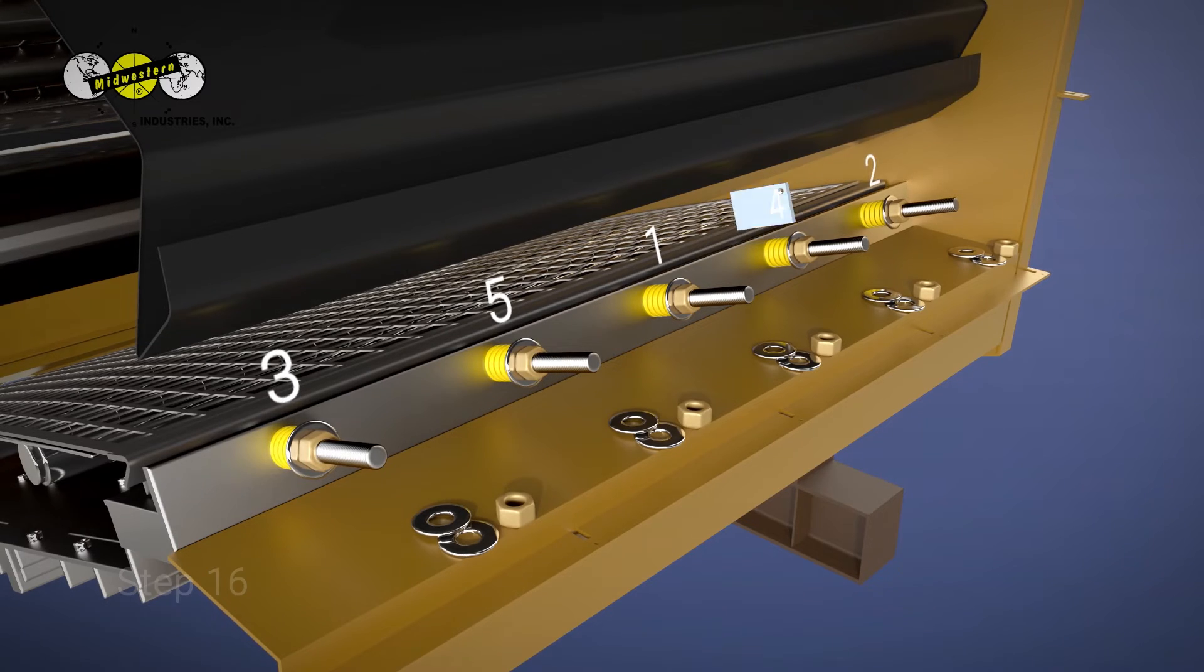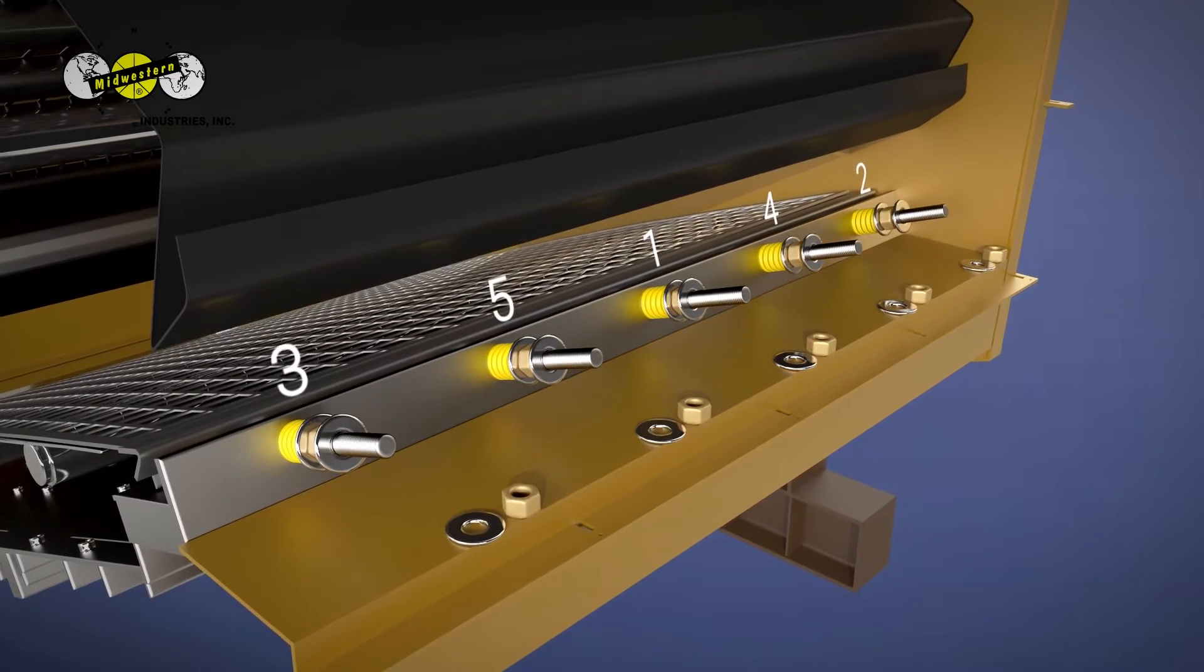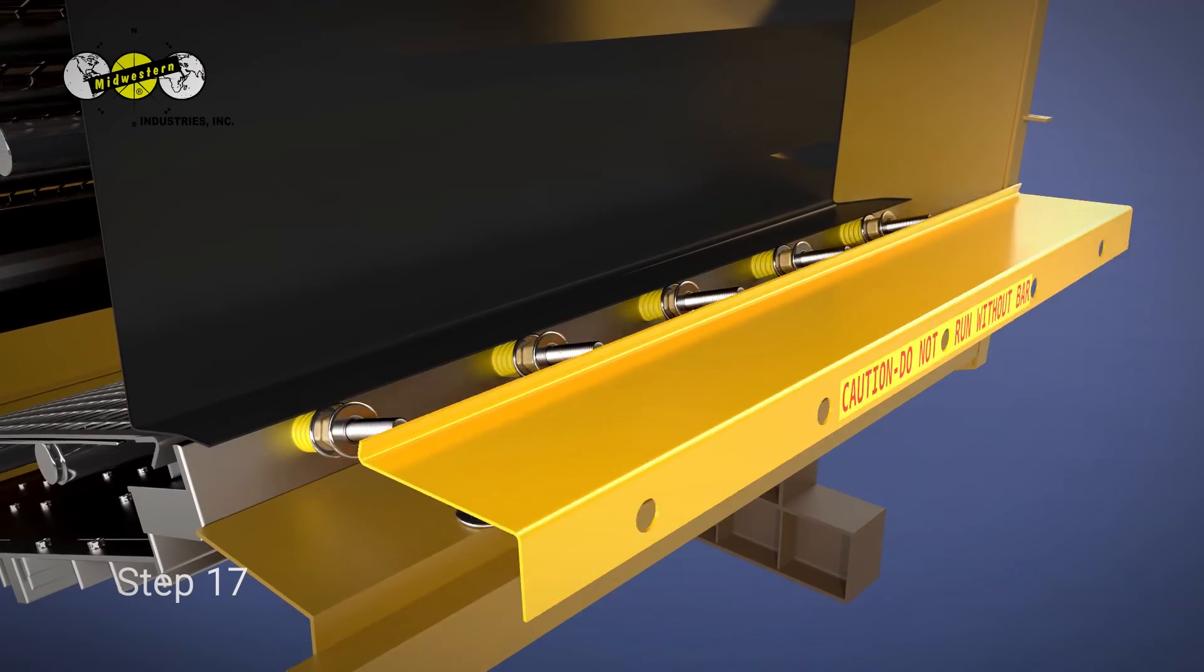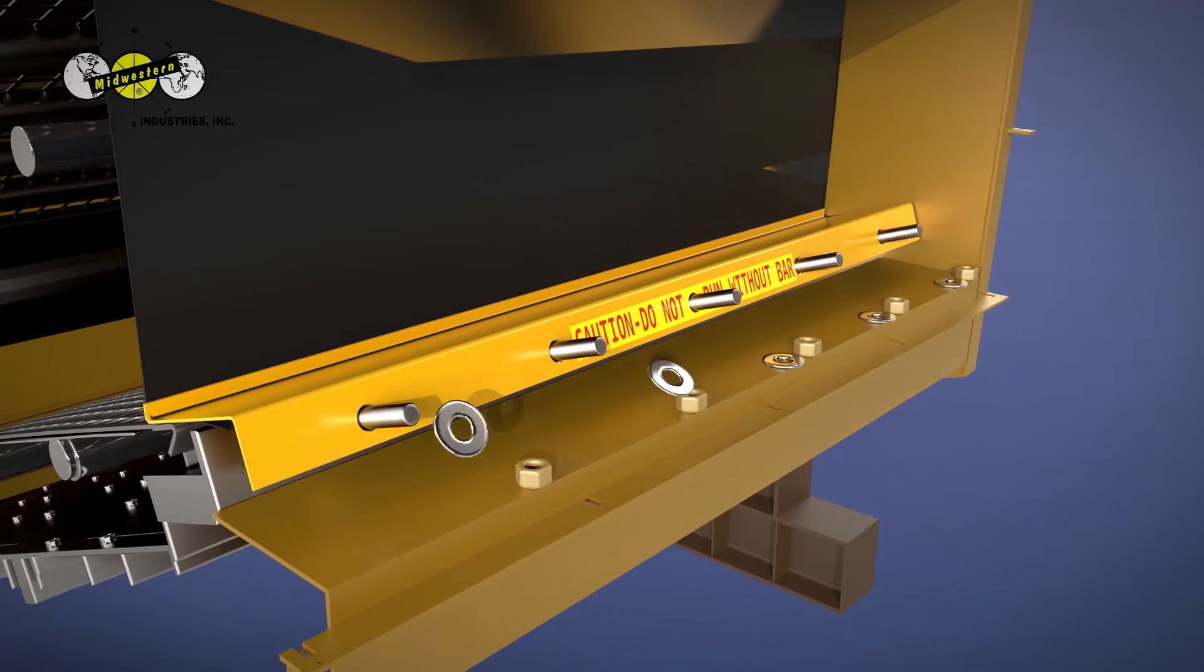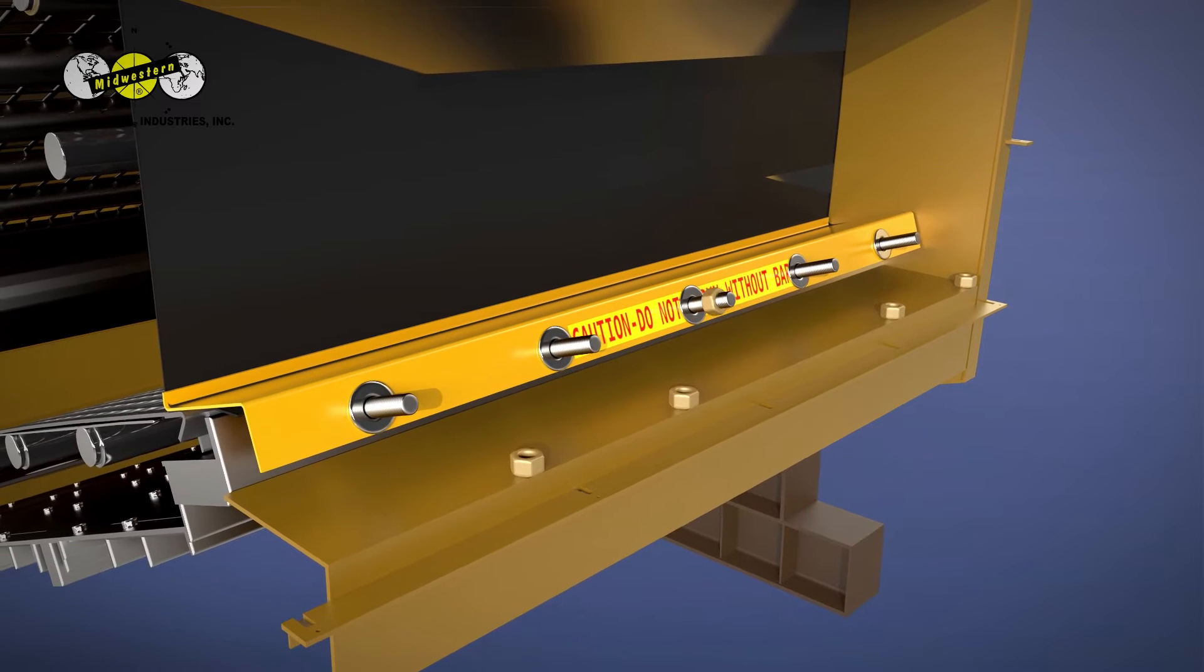Step 16: Reinstall the safety guard bar washers. Step 17: Reinstall the rubber curtains and yellow safety guard bar.